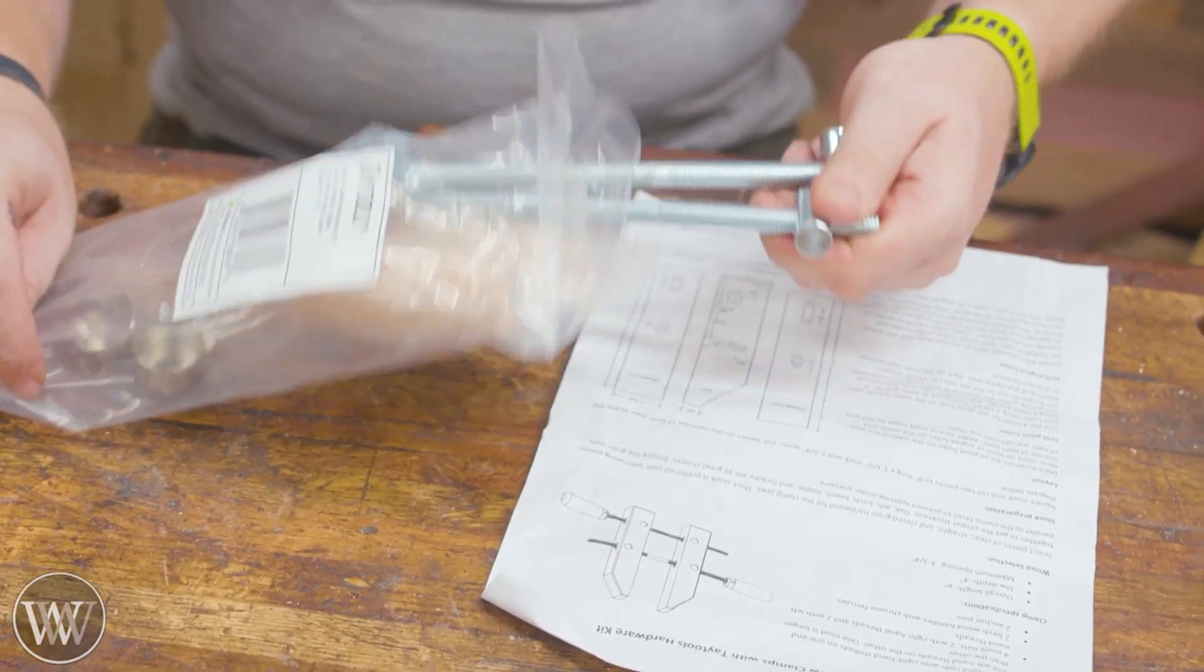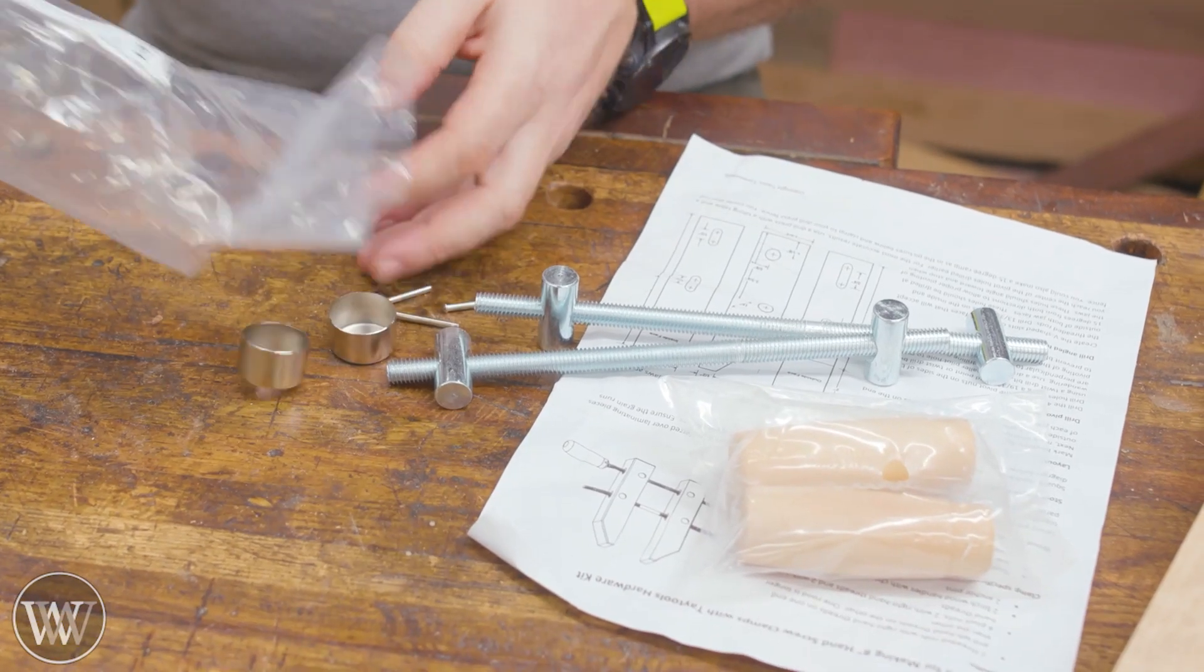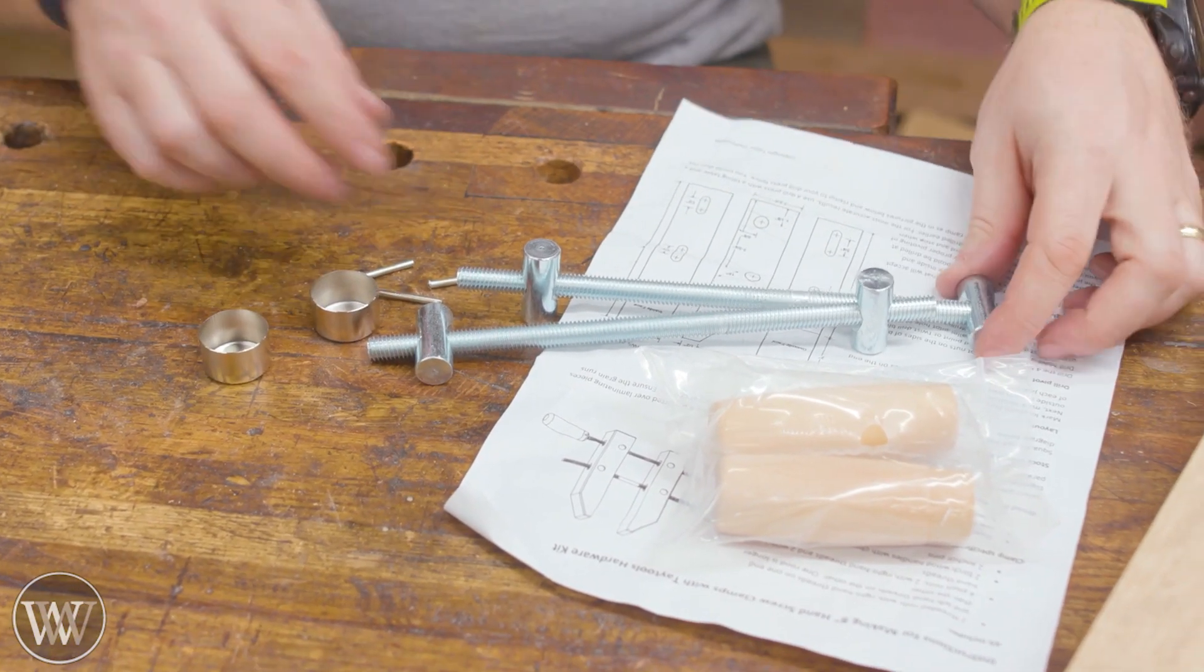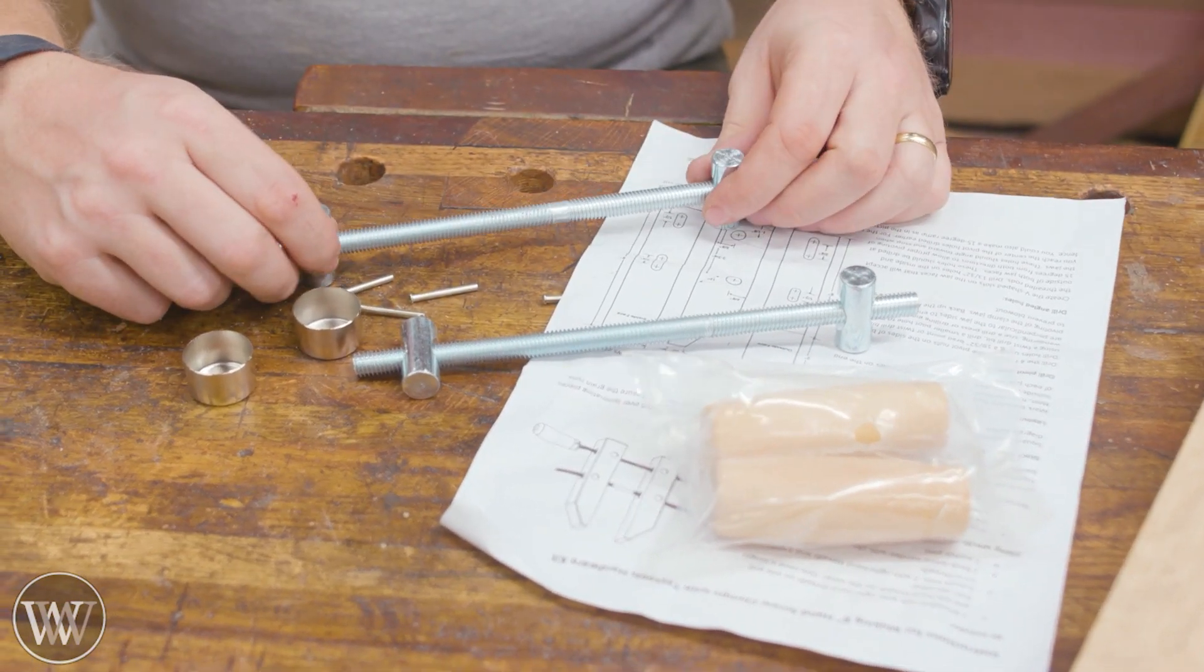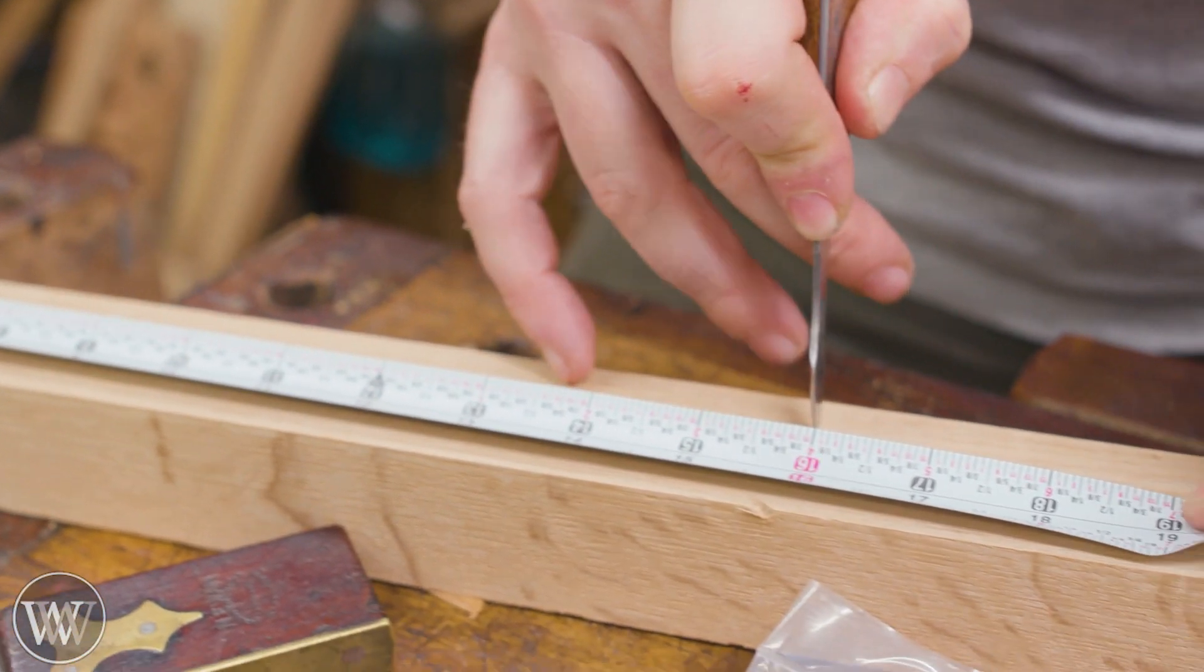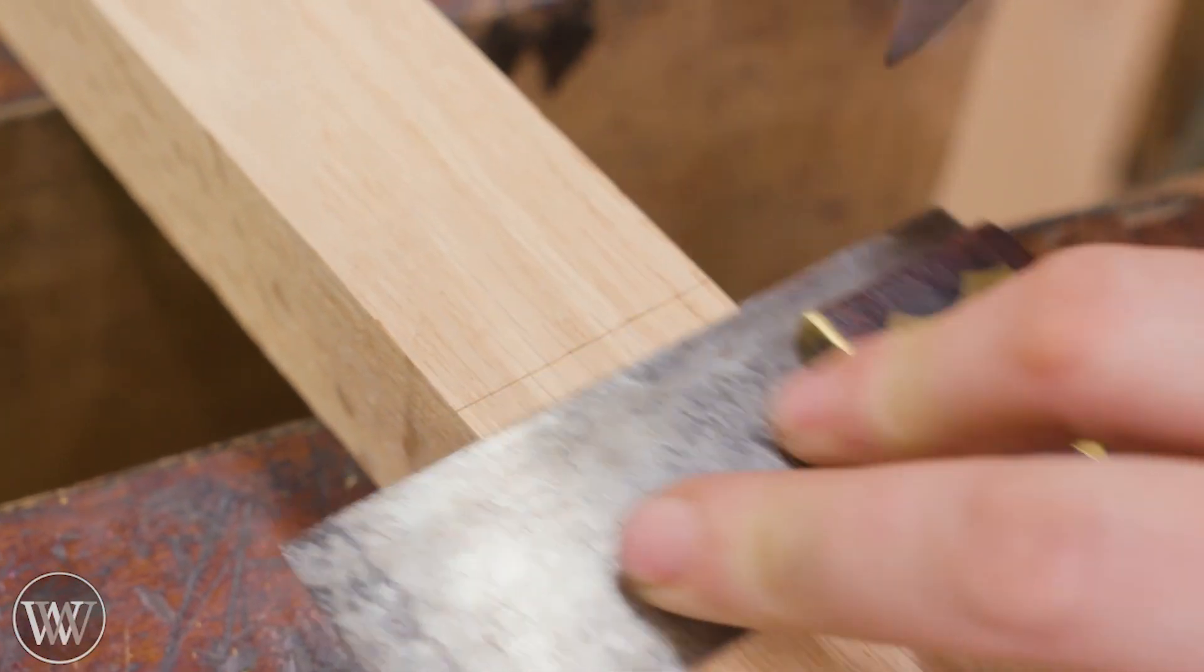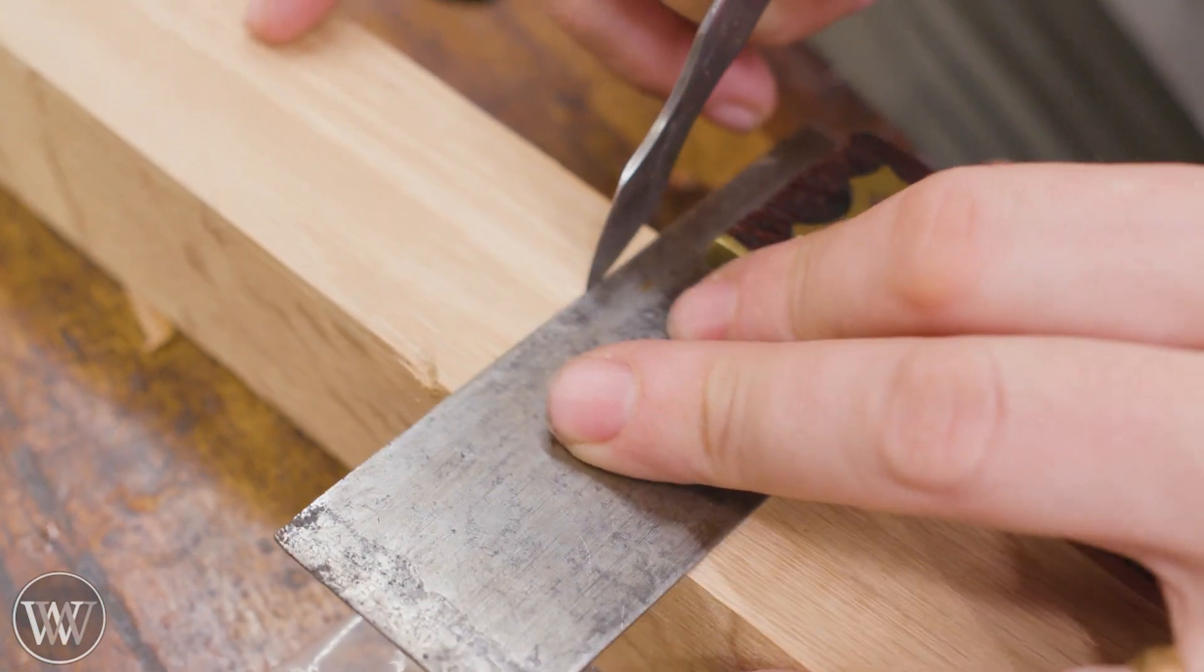We're going to be starting this off with a kit from Tay Tools. They make these, and they are a fantastic kit. They come with all the hardware you need, as well as the turned handles, and all of the measurements. All you need is the stock for the two jaws.